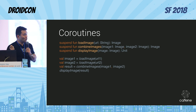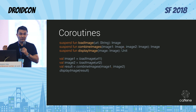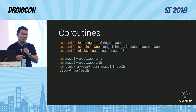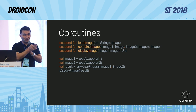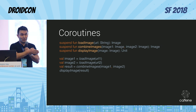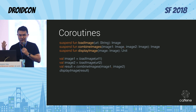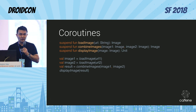One of the rules is: in order to call a suspending function, you already need to be inside a coroutine. That's why we have the whole concept of coroutine builders — to transition from the non-suspending world to the suspending world, you need some sort of a bridge. So there are coroutine builders like launch, await, runBlocking, and so on — lots of different ones meant for various scenarios.